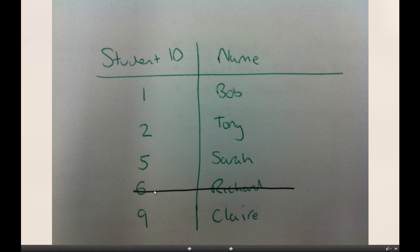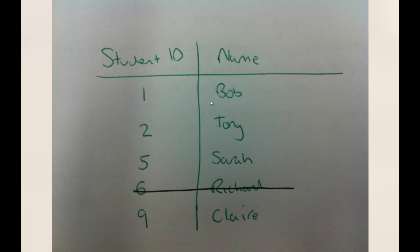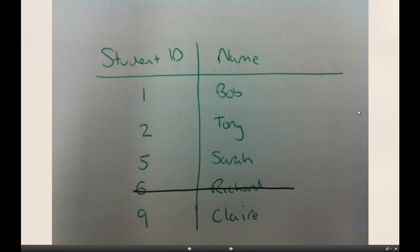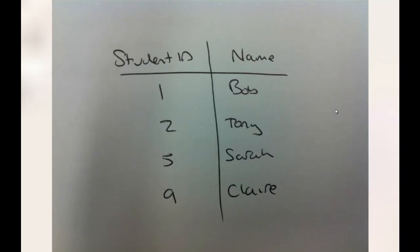If we want to delete a record — say we want to delete Richard — the deleted item creates a gap in the sequence. The same process as the serial file applies: the file is recreated. We copy all the file's records into a new file apart from the one to be deleted. This replaces the original file. So we'd copy the other three across, ignore Richard's record, and keep the new file instead.